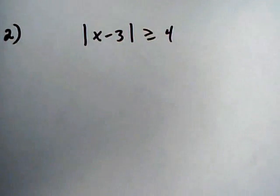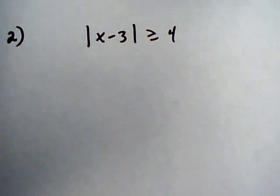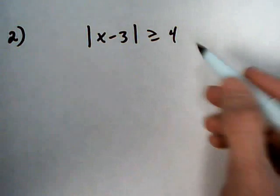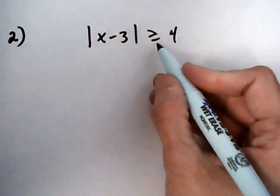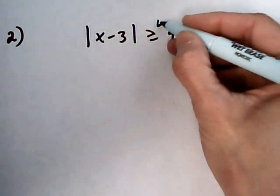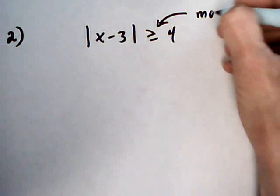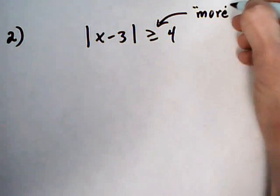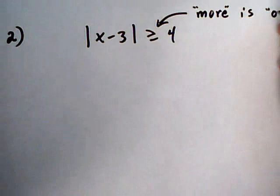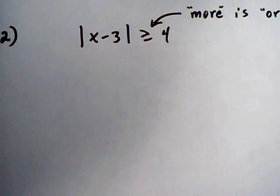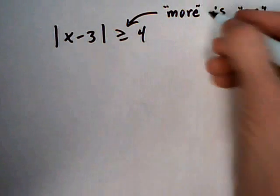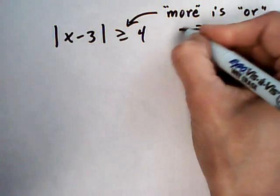For number 2, we have another absolute value but now we have an inequality. The absolute value of x take away 3 is greater than or equal to 4. And remember saying that when you have greater than or more, more is or. So you're going to use an or setup and you're going to get one of those split graphs.